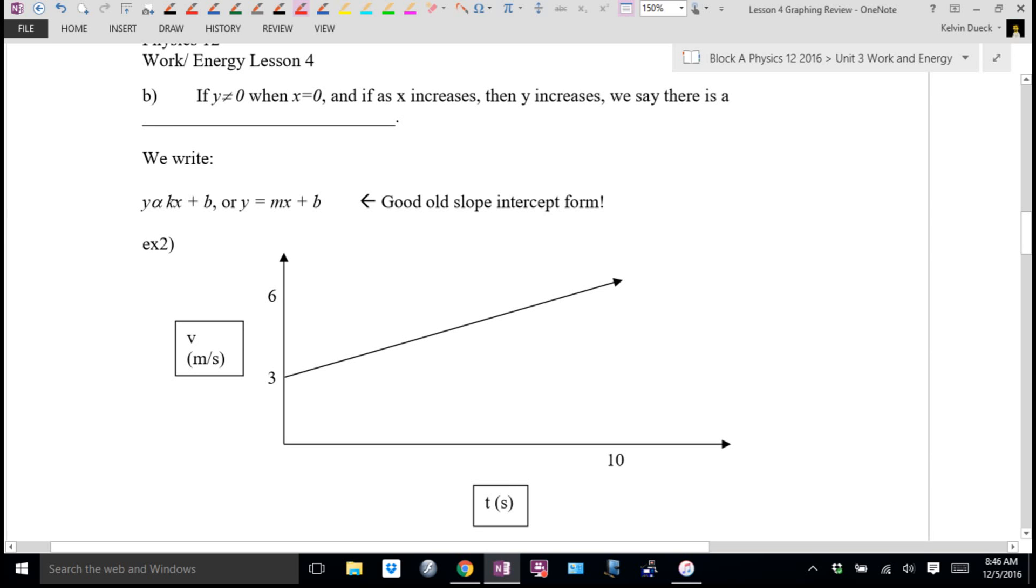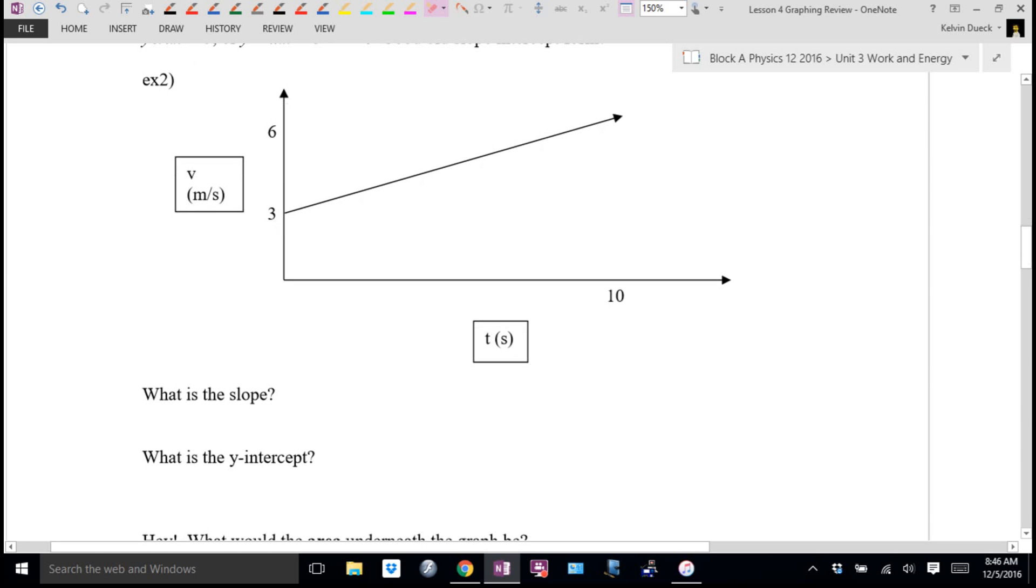If we don't go through zero, zero, but still as x gets bigger, y gets bigger, we say there is an indirect proportion or variation. We write y is proportional to some kind of constant or slope times x plus you need a y-intercept. It really is slope intercept form written slightly differently. If I want to turn it into an equation, I have to find what m is. It's a good old slope intercept form.